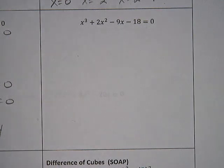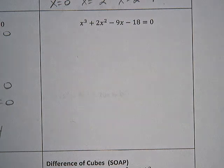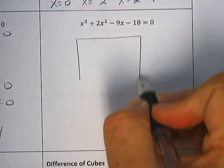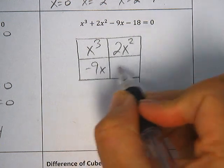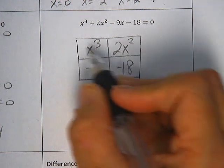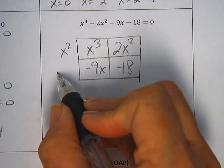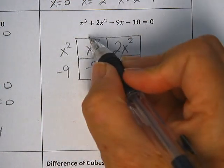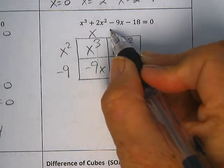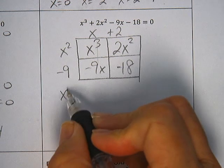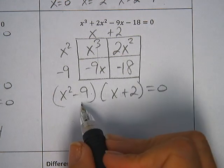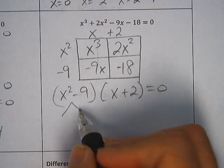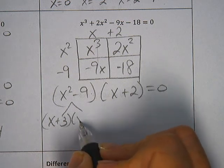We're going to take a look now at another cubic equation. The first step always is to look for our greatest common factor. This one doesn't appear to have anything we can factor out, so we move straight to building the box. We've got x cubed, 2x squared minus 9x minus 18. So in the top row I've got an x squared I can factor out. Bottom row is a negative 9. Left column is an x and right column is a positive 2. So my factors here are x squared minus 9 multiplied by x plus 2. Those both look like perfect squares.